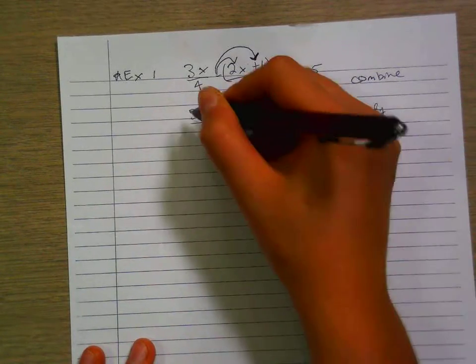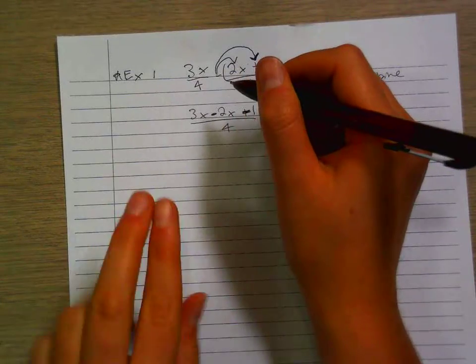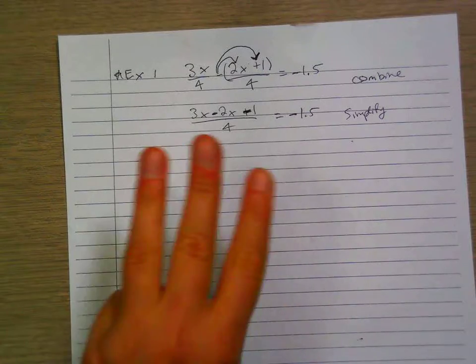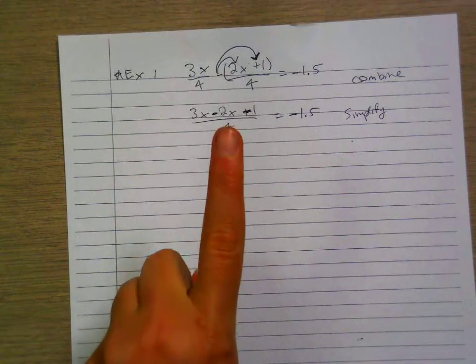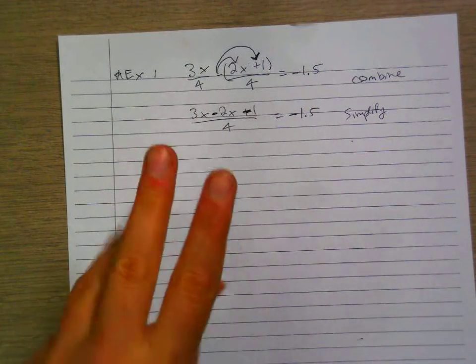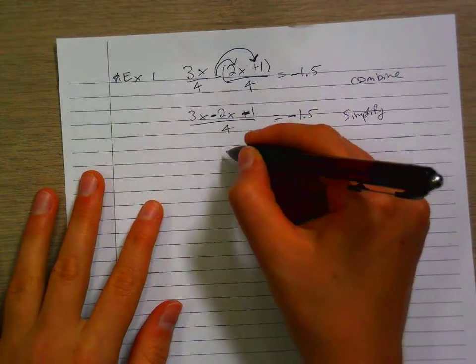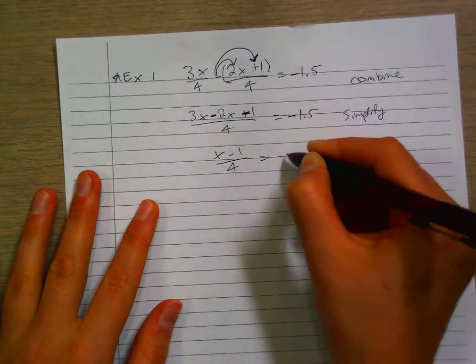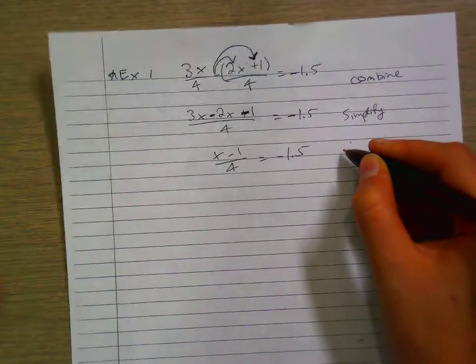Now that we've combined, let's simplify. We know that if we have 3x's and we take away 2, so we start with 3, we take away 2, we're only left with 1. So 3 take away 2, we're left with 1. That becomes x minus 1 over 4 equals negative 1.5.